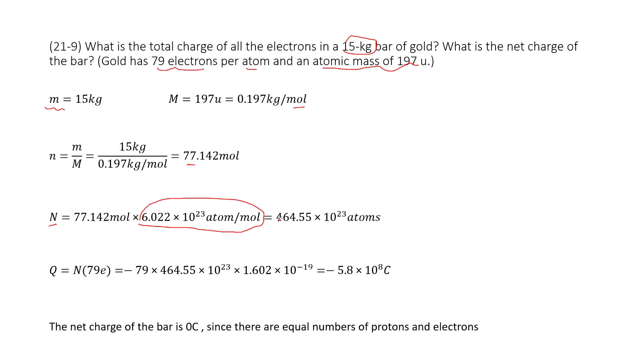Next, you get the number of atoms. And there are 79 electrons per atom. So now you get the total charge. Use this number of atoms times the 79 electrons.